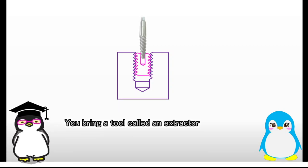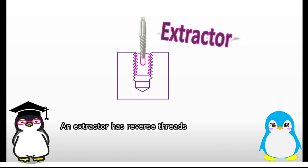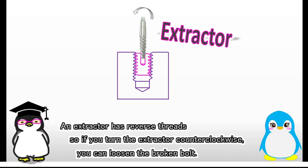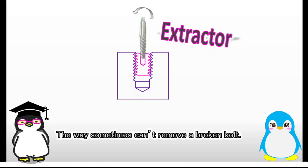Yeah. After that, you bring a tool called an extractor, and then you insert it into the hole you drilled. An extractor has reverse threads, so if you turn the extractor counter-clockwise, you can loosen the broken bolt. I didn't know that way.